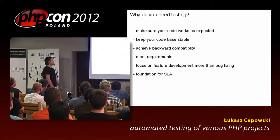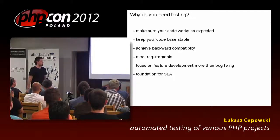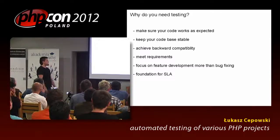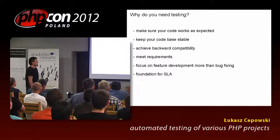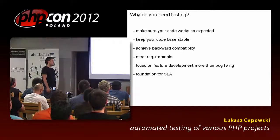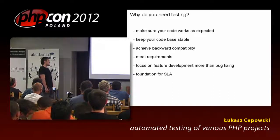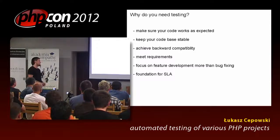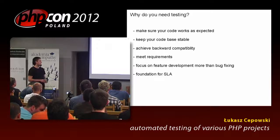Do you need testing? People test software to make sure it works as expected — this can be described as conformance to requirements. Testing is also used to keep the code base stable and achieve backward compatibility. For instance, if you have software produced over a year, you want to keep it backward compatible with older databases, especially if you deliver a box product rather than software as a service. Testing is also used to check non-functional requirements like whether an application can handle 100,000 requests per second, database scaling, and failover.